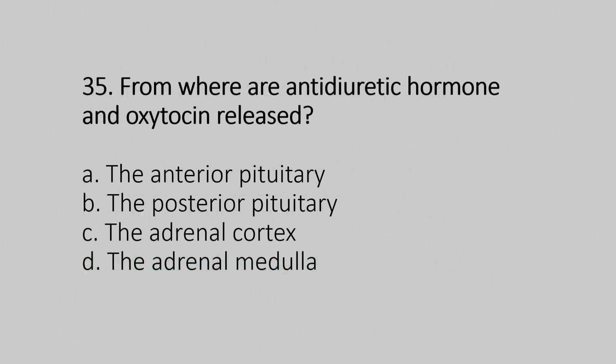Now let's move to question number 35. From where are antidiuretic hormone and oxytocin released? Option A: anterior pituitary. Option B: posterior pituitary. Option C: adrenal cortex. Option D: adrenal medulla. And the answer is Option B — posterior pituitary.